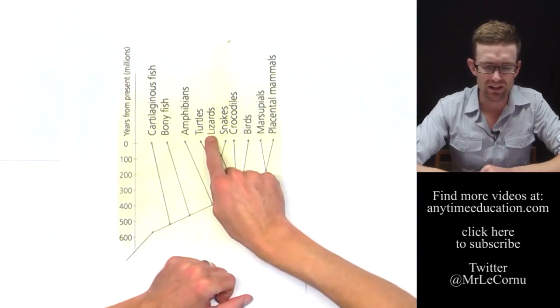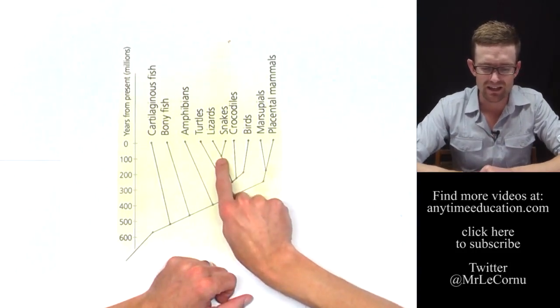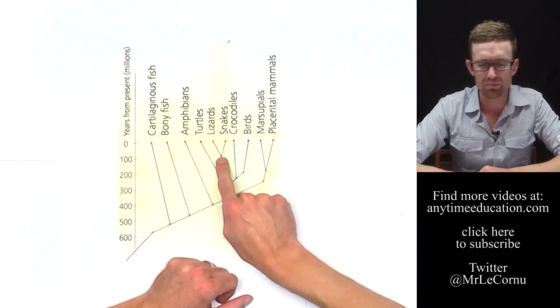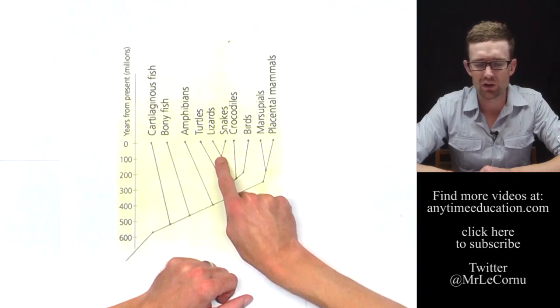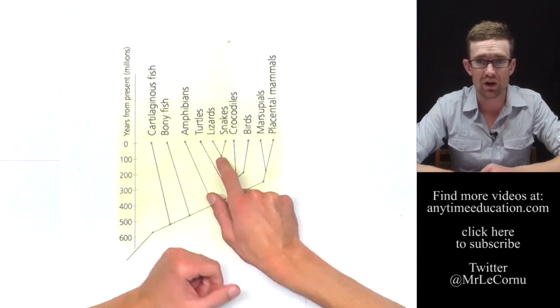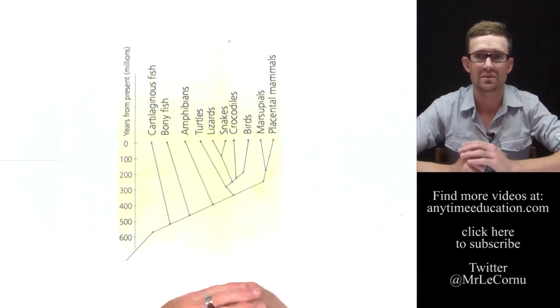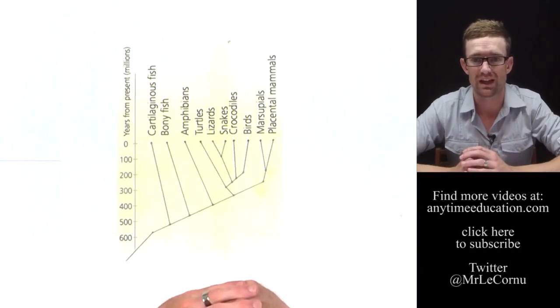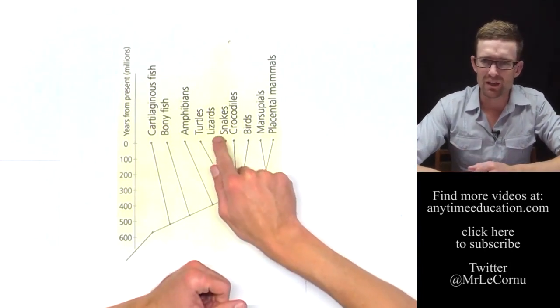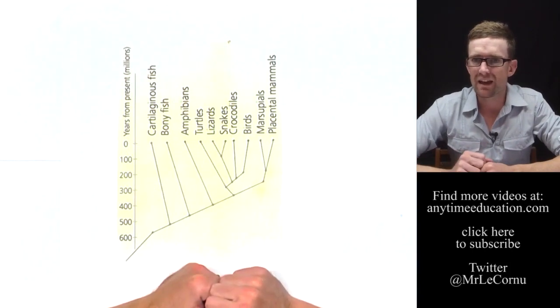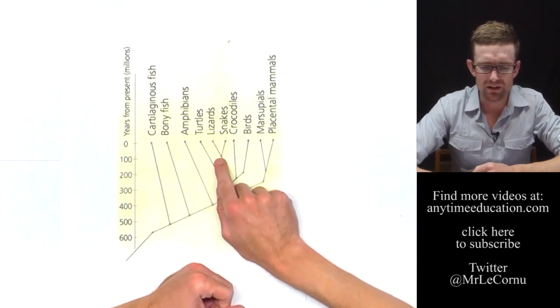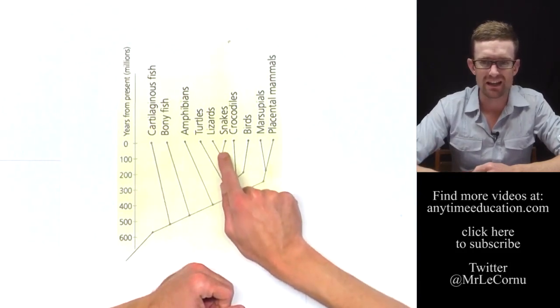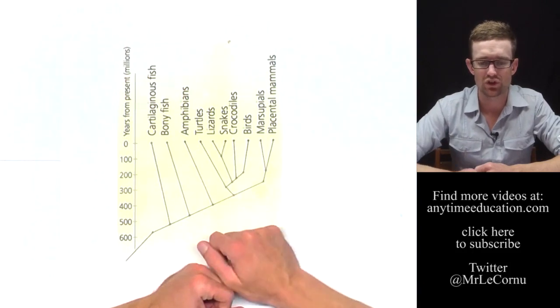If we have a look at here, lizards and snakes, their separation point is only about 100 million years ago. In evolutionary terms, that's not very long at all. It sounds like a long time. And that's because we need an enormous amount of time for evolution to take place. But if you think about lizards and snakes, they are two fairly similar species. And the reason for that is that they separated only recently, their DNA has not had much time to change.